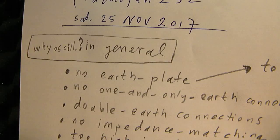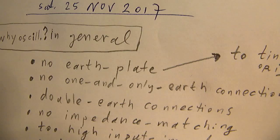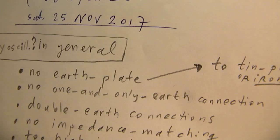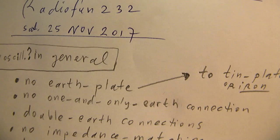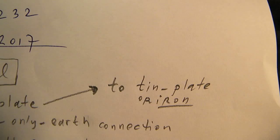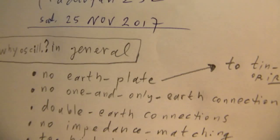The second problem is no one and only earth connection. When you have an audio amplifier made, there must be one and only earth connection to the metal enclosure from preferred tin plate or iron.